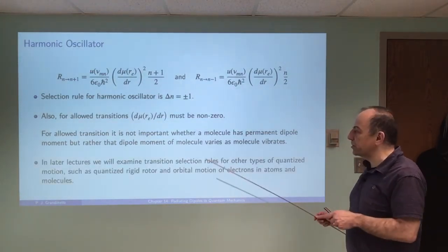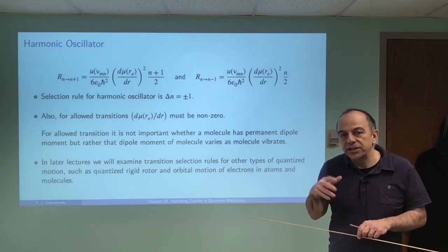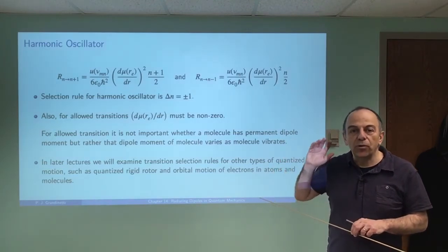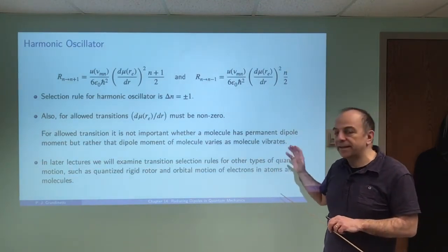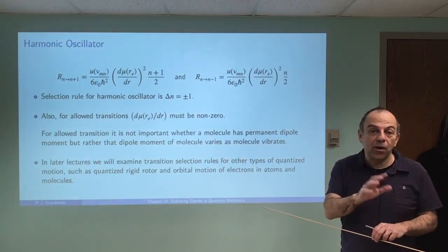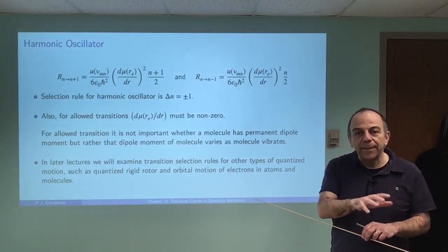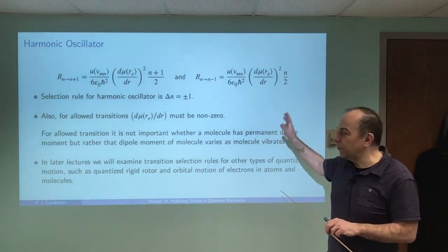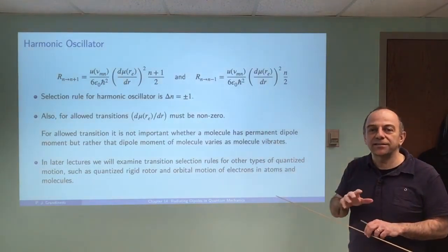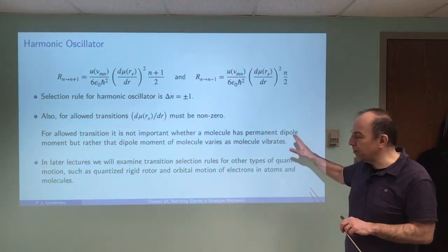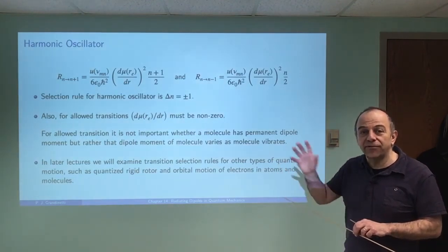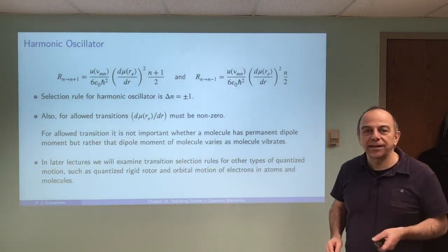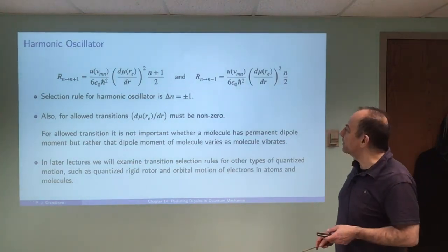In other lectures, we're going to learn about transition selection rules for other types of motion, like rotational motion or electronic transitions — we'll do those in those chapters. We've already talked about the quantum harmonic oscillator, but we didn't talk about transition rules there because we didn't know the material in this chapter. So we did a little catch-up here, and from here on, as we tackle each different type of quantized motion, we can also work out what the transition selection rules will be.